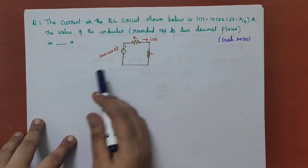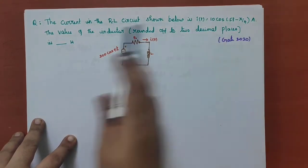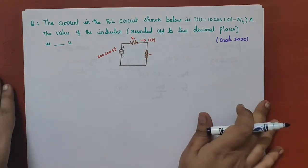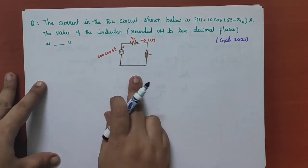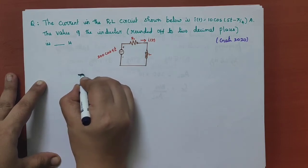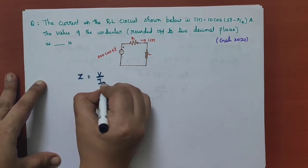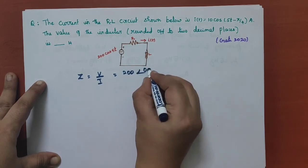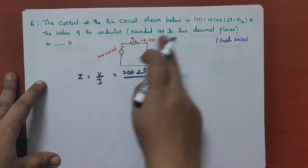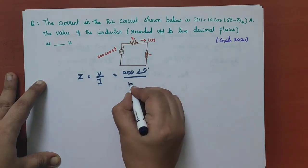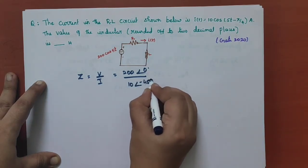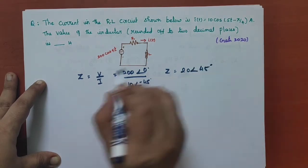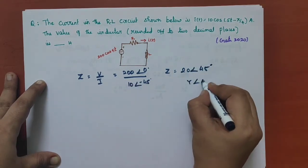The first question is the current in the RL circuit shown below is given. The value of the inductor given here is to be found. To find L, we have to know the total impedance of the circuit. The total impedance is Z equal to V divided by I. V is 200 written in polar form angle 0 degree, divided by I is 10 angle minus 45 degree. So Z equals 20 angle 45 degree.